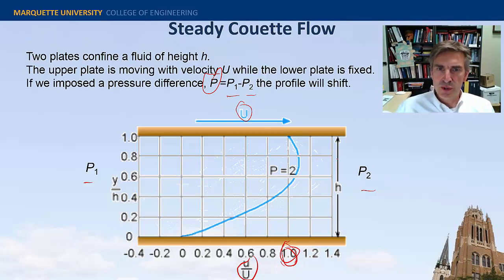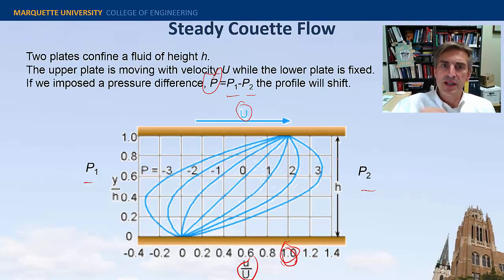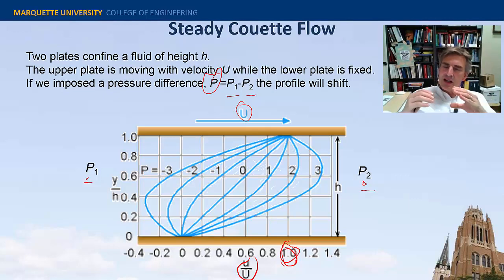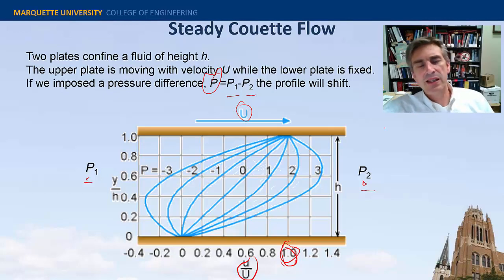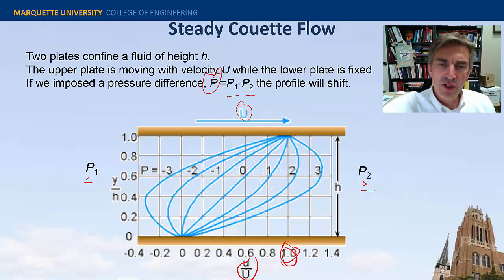I could also use the pressure to slow the fluid down. In the case where P1 minus P2 is less than zero, meaning P2 is greater than P1, the flow is in an adverse pressure gradient situation. It doesn't want to go down the channel because the pressure is retarding the flow. However, it's being dragged along by the plate and must satisfy the no-slip boundary condition. So in some region very close to the plate the velocity is equal to one. However, we could actually get the velocity to flow backwards if we increase the adverse pressure gradient large enough.